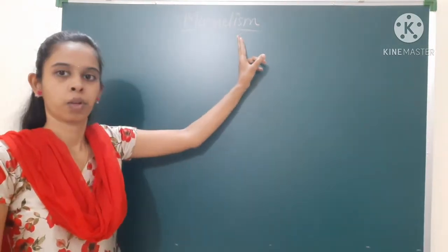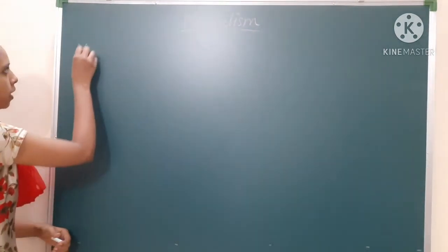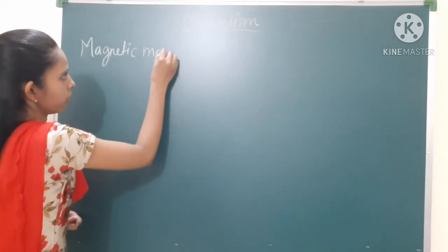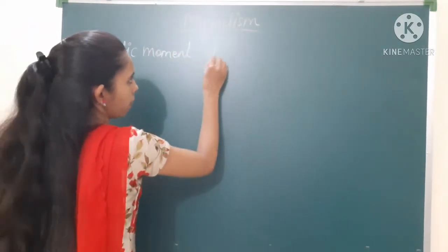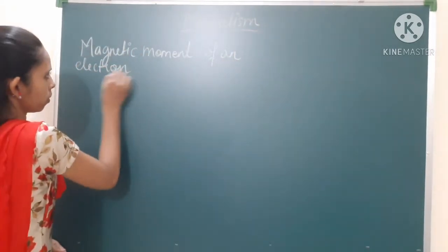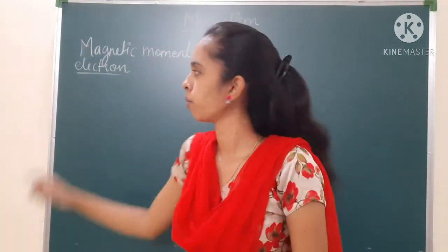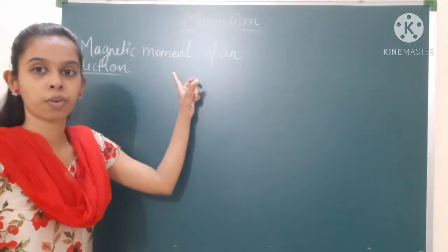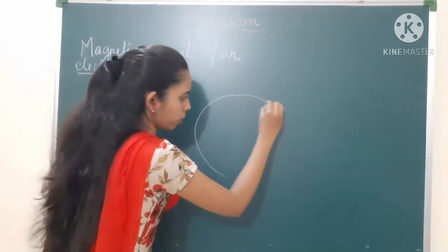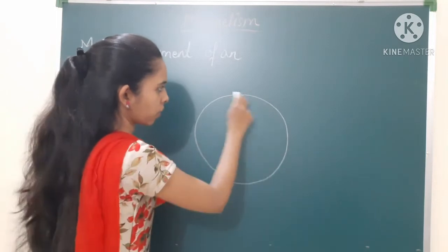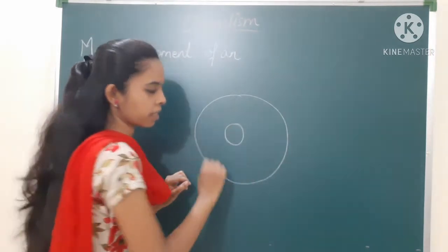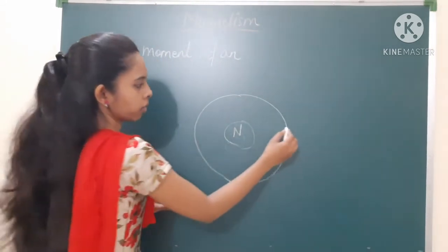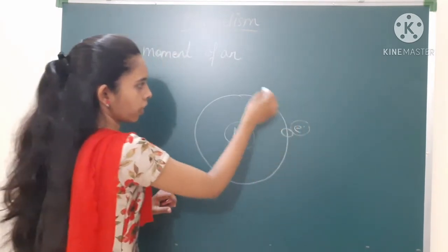Our next topic is magnetism. From this we are going to study the magnetic moment of an electron, specifically an electron which is revolving around the nucleus. If we draw the diagram for this topic, we can see the circular path of an electron — this circular path is called the orbit. In the middle there is a nucleus, and the electron moves around it.